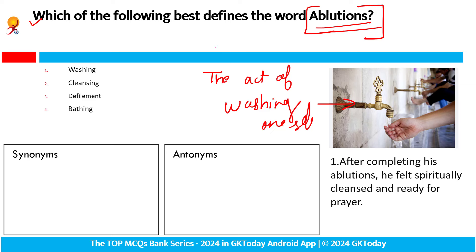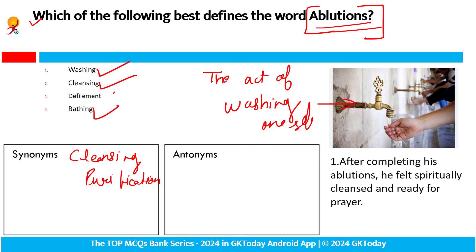Synonym: cleansing is the first word, purification, washing, bathing. Cleansing synonym, bathing synonym. While the antonym is defilement — defilement means contamination, pollution. Defilement ho gaya. Filth is also a good word. For pollution, we use the word filth. Contamination — sankramit, infectious contamination.